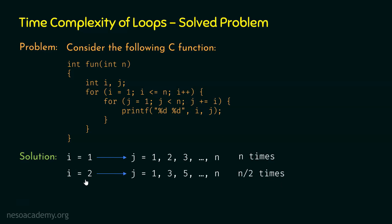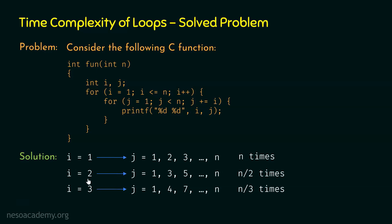We can now observe a clear pattern. For i equal to 1, the denominator is 1; for i equal to 2, the denominator is 2; for i equal to 3, the denominator is 3. Clearly, when i is equal to n — the last value for which the outer loop condition is true — this inner loop will run n/n times. So we now know how many times the inner for loop executes for each iteration of the outer for loop.